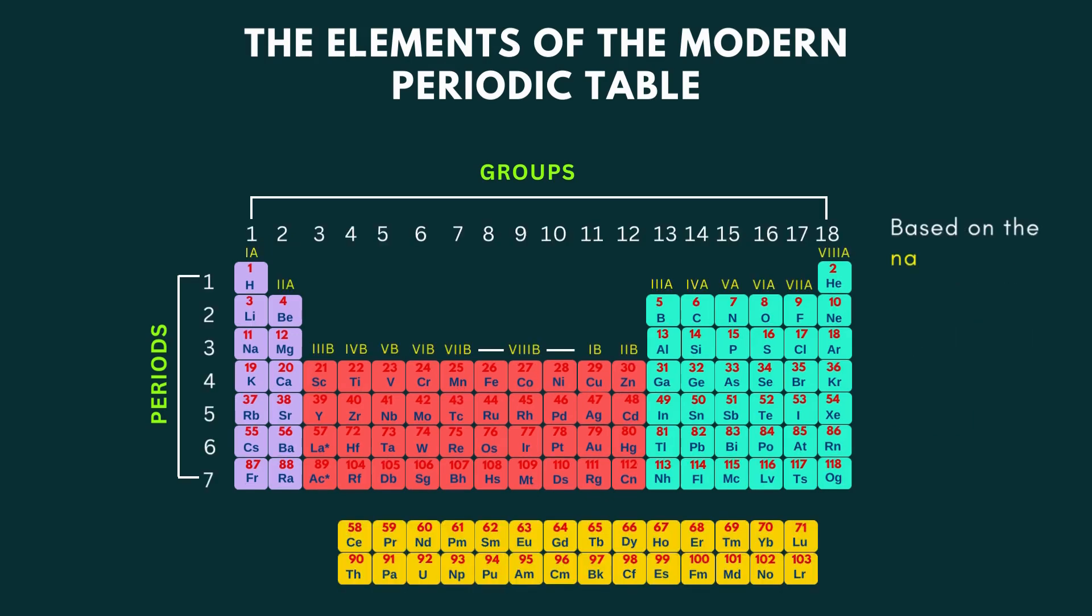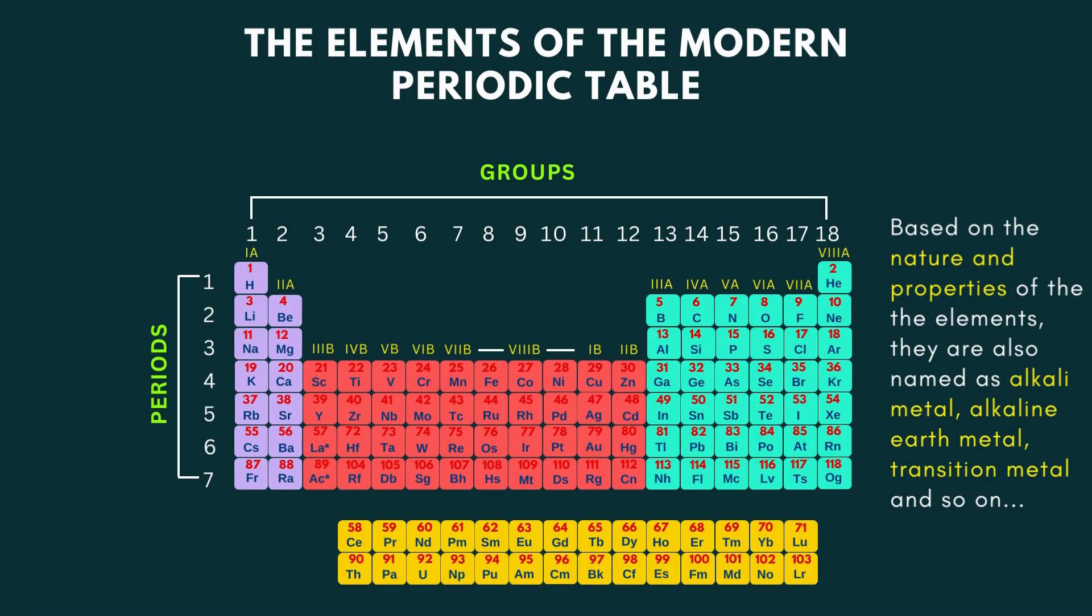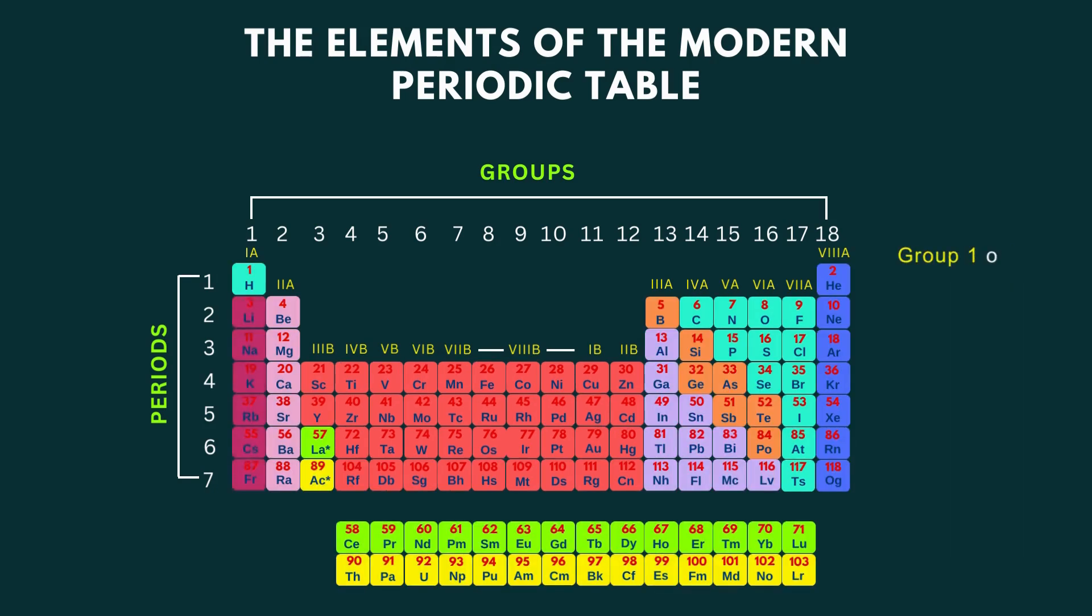Based on the nature and properties of the elements, they are also named as alkali metal, alkaline earth metal, transition metal, and so on. All the group 1 elements except the first element are called alkali metals.